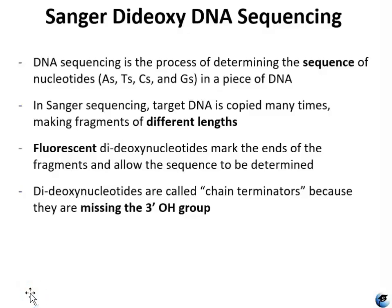While PCR is great for making more DNA, it can't tell you the actual nucleotide bases that are contained in the DNA or the order in which those nucleotides appear. So if you need to know the sequence of the DNA, you're going to need to perform a sequencing technique. This particular sequencing technique — Sanger dideoxynucleotide sequencing — is also called the chain termination method. It was developed by Frederick Sanger in 1972.